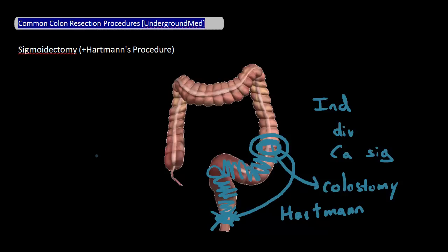Lastly, I just want to briefly mention that a total colectomy is when you remove the entire colon. And if the rectum is removed as well, this is called a proctocolectomy.